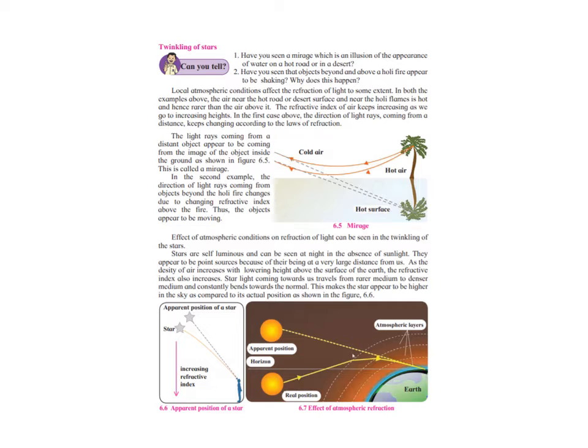The second example that we see is twinkling of stars. When we look at the sky in the night, we see the stars as if they're twinkling. Now why do they appear to be twinkling? The stars are self-luminous; they have their own light and can be seen at night in the absence of sunlight. They appear to be point sources because they are at a very large distance from us.